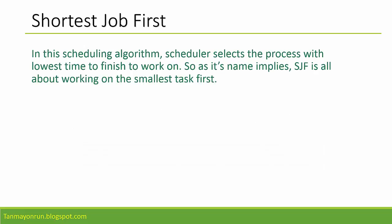Shortest Job First, as its name implies, actually gives priority to the shortest job on the list. At a given time, the shortest job among all the jobs will be processed for a particular amount of time, and then it looks again for the next shortest job — that could be the same job again or another job on the list. That's Shortest Job First in short.